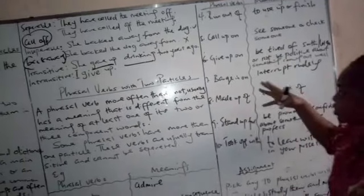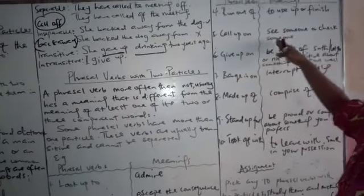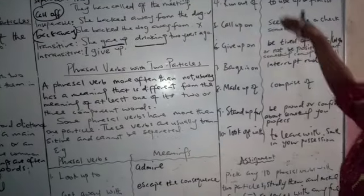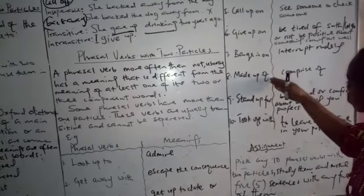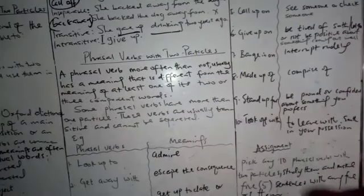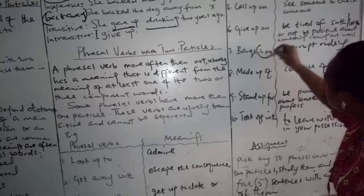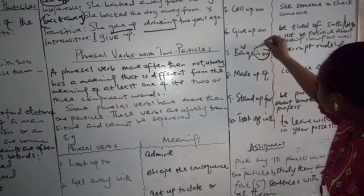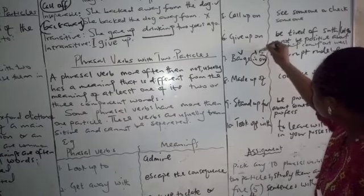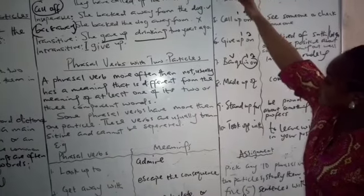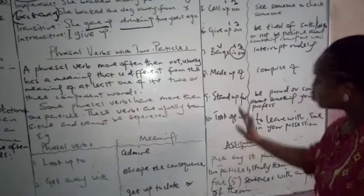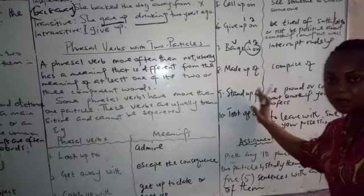We have run out of. It means to use up or finish. Call upon. See someone or check something. Remember, these are phrasal verbs that have more than one particle. What are particles? The addition to the verb. The verb and these are the additions. We have one, two. One, two. One, two. More than one particle. Those ones which are attached to the verb are the particles.